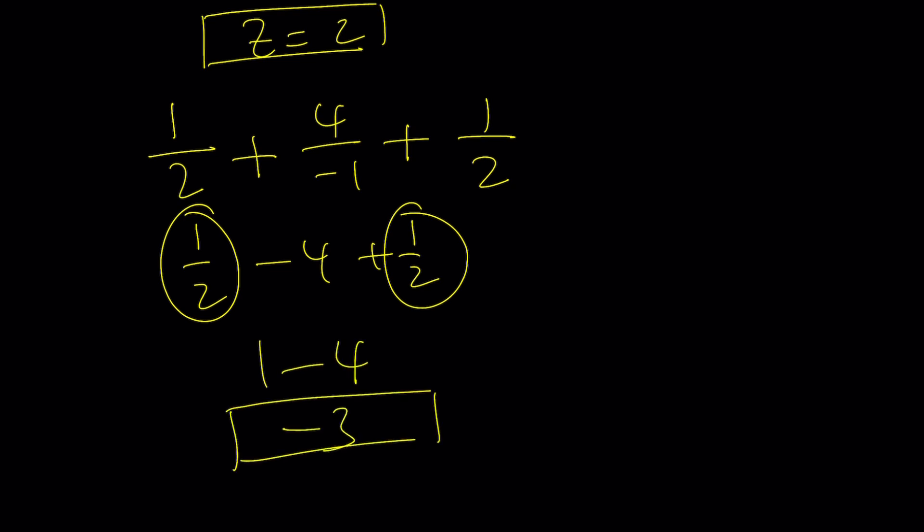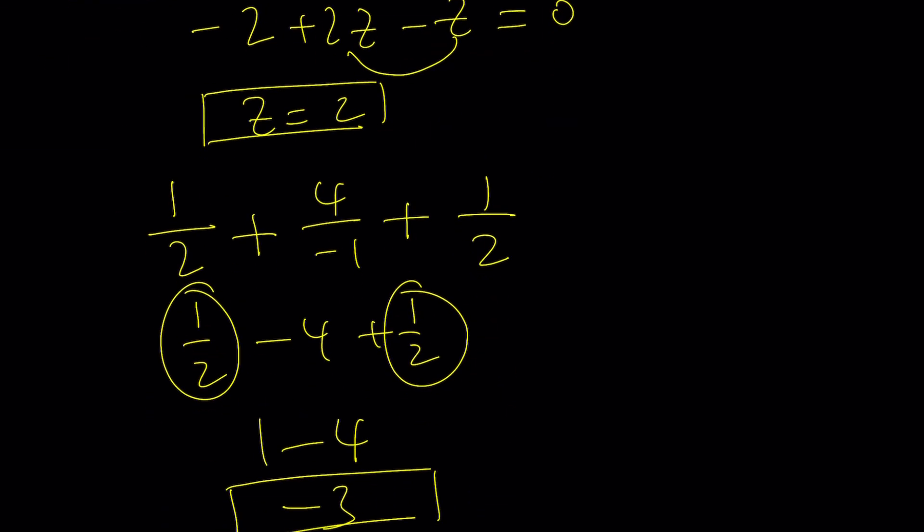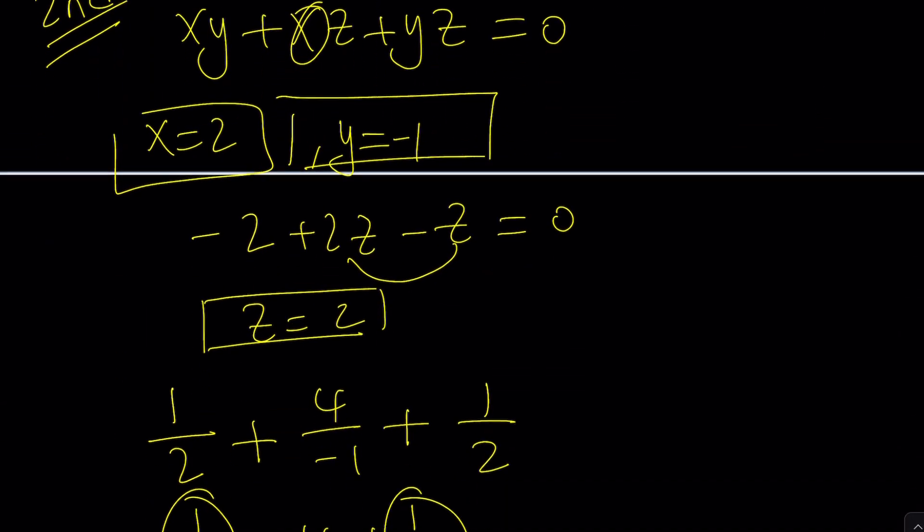So hopefully the answer is negative 3 and you can check it with a different combination of values. Of course, don't use anything like y equals 2 and x equals negative 1 because that will probably result in something similar. Great. So at least we've got a nice combo and you can try different options. But this is by no means a rigorous solution because we're only testing values.